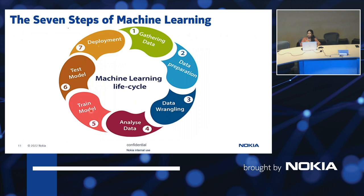We choose a model from the many available, selecting the appropriate one. First, we train the model with existing data, then we test the model and check the accuracy. We evaluate the model — if the accuracy is low, we go back to training and repeat until we get an appropriate model. Once we have the appropriate model, we deploy it. This is the machine learning lifecycle.